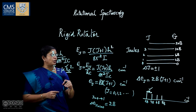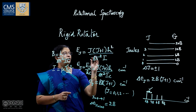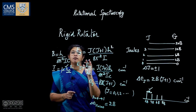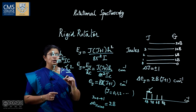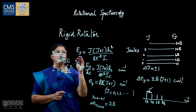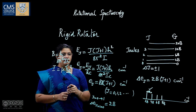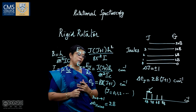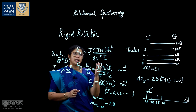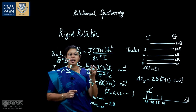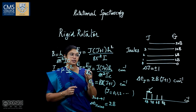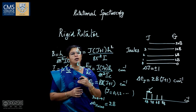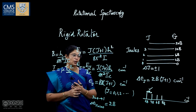An important point is that for a molecule to exhibit rotational spectroscopy, it must have a permanent dipole moment — meaning the molecule must be heteronuclear. Homonuclear molecules generally do not exhibit rotational spectroscopy. For example, HCl and CO exhibit rotational spectroscopy, while H2, N2, and O2 do not.